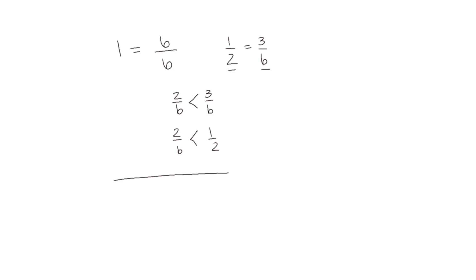Let's look at that on the number line. If this is one half, and we divide our number line into sixths, this would be two sixths, and we see in fact we're right — two sixths is less than one half.